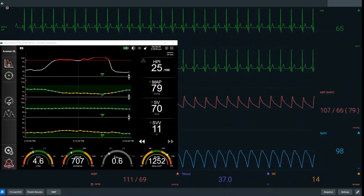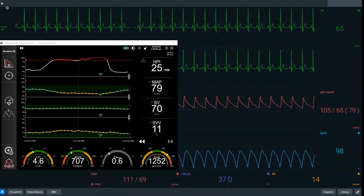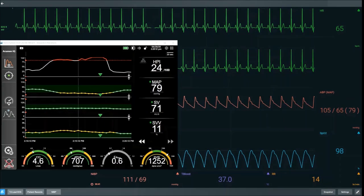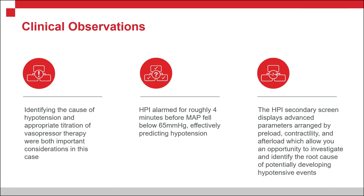By looking at HPI, being warned about impending hypotension, and interrogating the secondary screen to identify the correct cause, we can rationally choose the treatment that is appropriate for this patient. Identifying the cause of hypotension and appropriate titration of vasopressor therapy were both important considerations in this case. HPI alarmed roughly four minutes before MAP fell below 65, effectively predicting hypotension. The HPI secondary screen displays advanced parameters arranged by preload, contractility and afterload to allow identification of the root cause of impending hypotension.